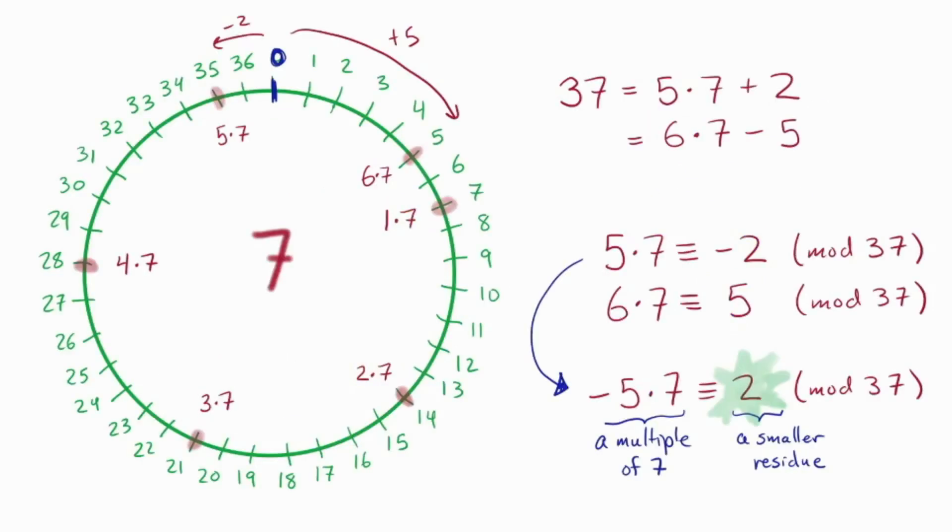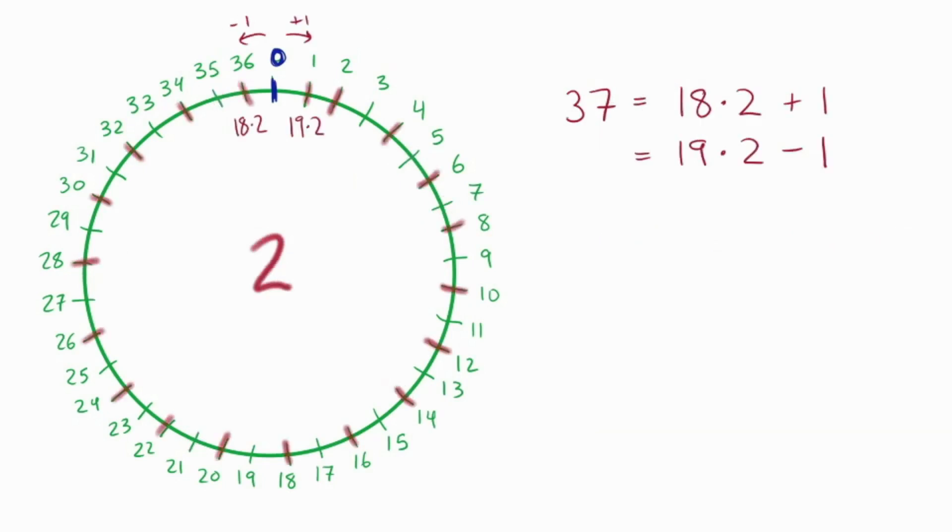So let's go back to the example we were doing. We just found a multiple of 7 that was 2. So let's start the problem over again with multiples of 2. Here I find that 18 and 19 twos surround 0. So I get two facts. 37 is 18 times 2 plus 1, and 19 times 2 minus 1.